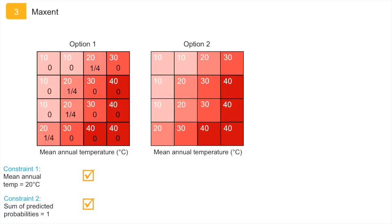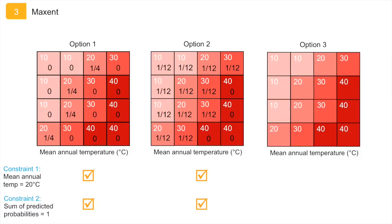Another option is to give 12 cells a probability of 1 twelfth, which also sums up to 1, and the mean temperature across these 12 cells is also 20 degrees. The four cells with a mean temperature of 40 degrees get a probability of 0. This distribution also meets both constraints. A third option is to give more weight to the cells where the species has been observed, compared to the other cells. This option also meets both constraints.